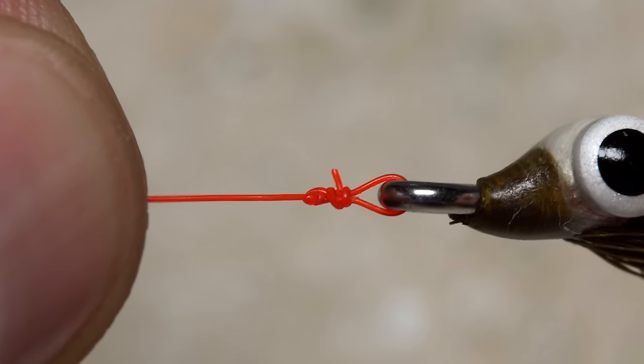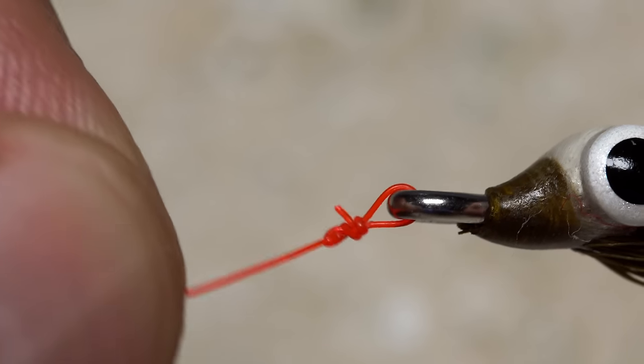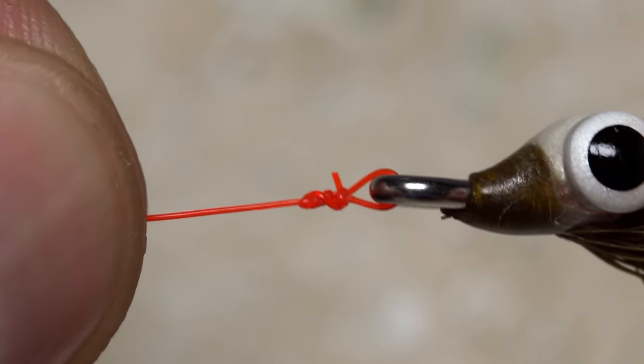The non-slip loop knot is one of the best ways to allow your flies freedom of movement in the water, but it can be somewhat slow and frustrating to tie.